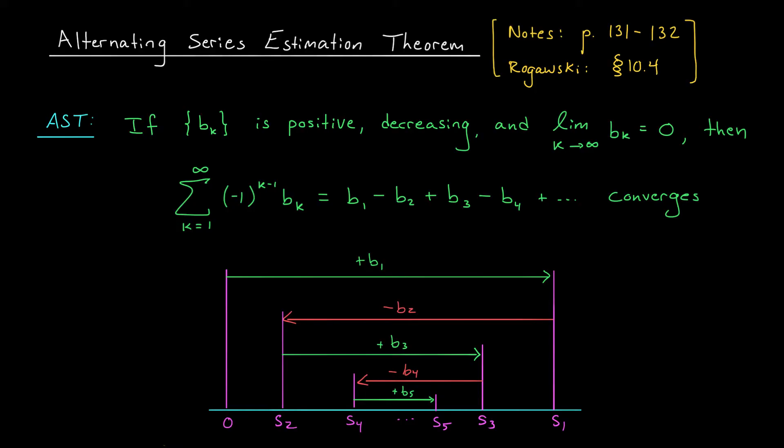Now, the reason I'm going over this once again is because there's actually a bit more information hidden in this picture. Specifically, there's a bound on the error that we get by using one of our partial sums to approximate the true sum. To see what I mean, suppose that we have a series that satisfies these assumptions.